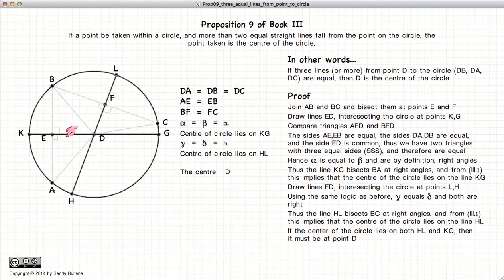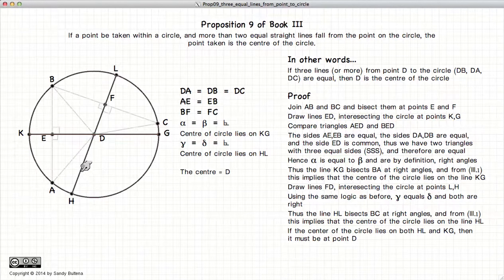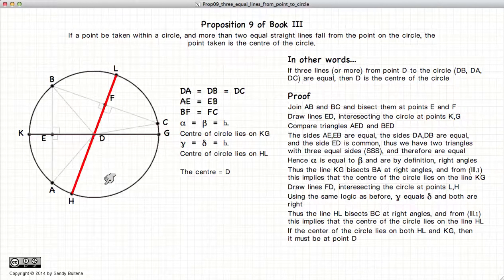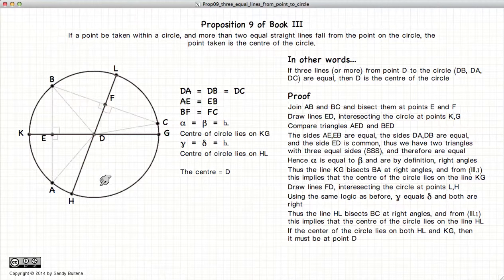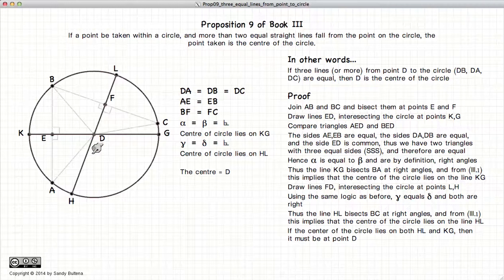Well, if the center of the circle must lie on KG and also on HL, there's only one place where the center of the circle can be, and that is the point D.